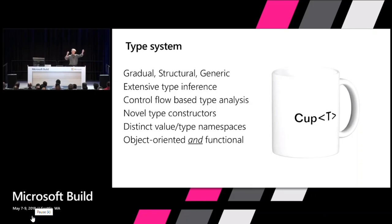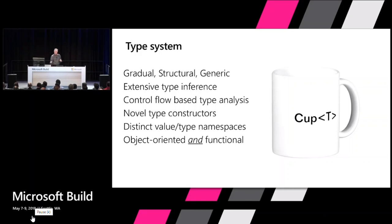Because you could access uninitialized memory and that would be bad. Because type system research was constrained in that sense, there was a lot of research that didn't actually happen. In particular there was very little that happened in this space of gradual typing, because TypeScript's type system is in a sense Swiss cheese — it's full of holes, but that's by design.